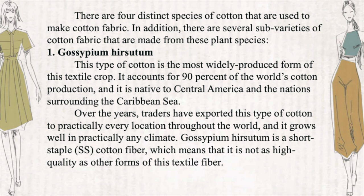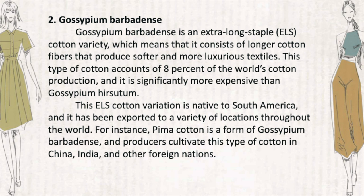Gossypium barbadense is an extra-long staple cotton variety, which means that it consists of longer cotton fibers that produce softer and more luxurious textiles. This type of cotton accounts for eight percent of the world's cotton production and is significantly more expensive than Gossypium hirsutum. This ELS cotton variation is native to South America and has been exported to a variety of locations throughout the world. For instance, Pima cotton is a form of Gossypium barbadense, and producers cultivate this type of cotton in China, India, and other countries.